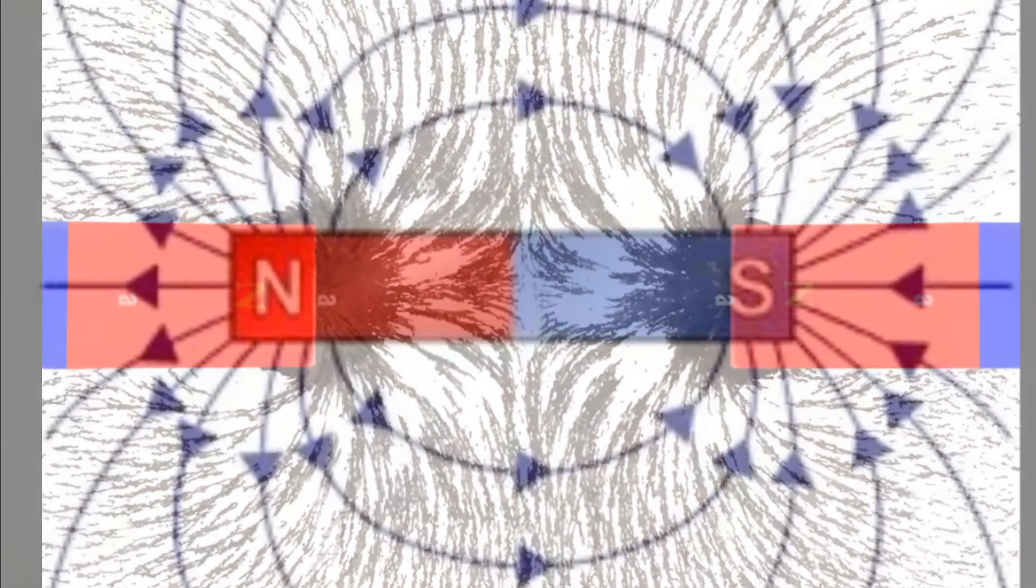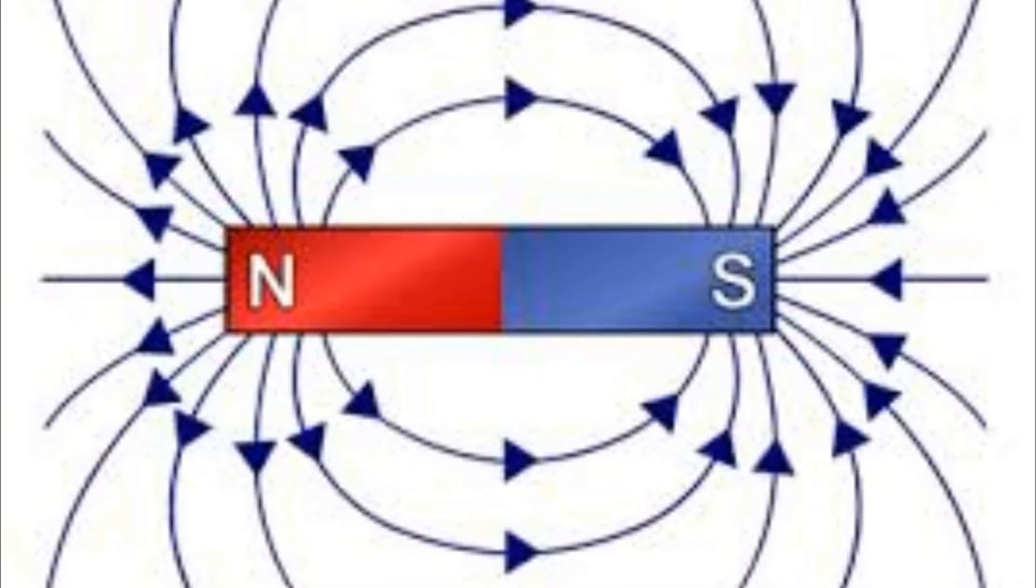Like poles repel. When like poles of two magnets are put together, the field between the two adjoining poles is greatly weakened. All the lines of force curve away as shown in the arrangement of iron filings.